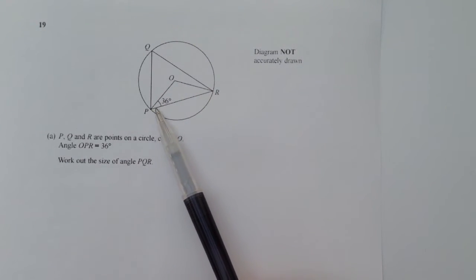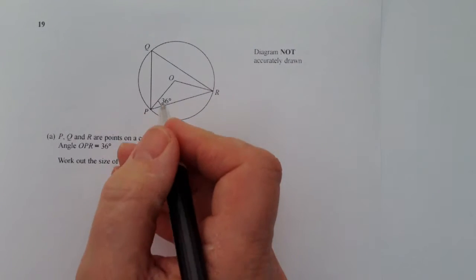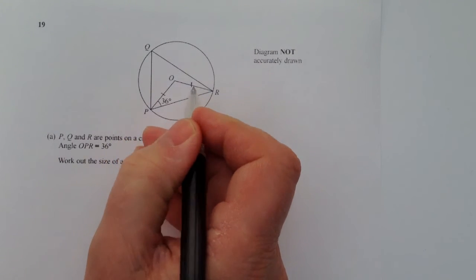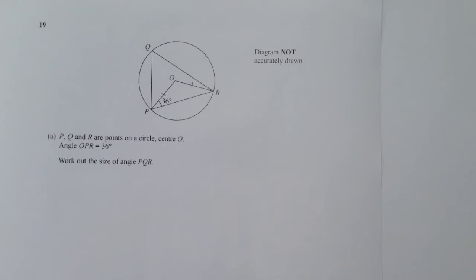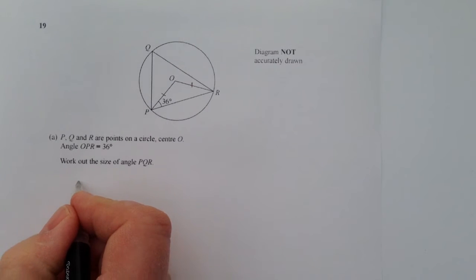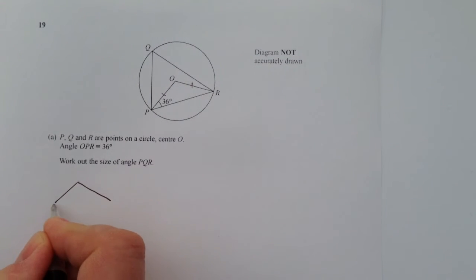What we mean by that is because this is the radius and this is the radius, they're both exactly the same because it's inside a circle. So therefore we've got a situation where we've got a triangle like this where the two sides are the same and this is 36 degrees.